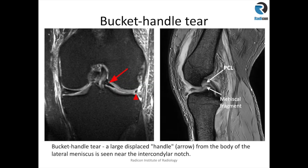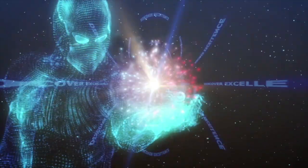Here is an example of a bucket handle tear where the handle of the bucket has displaced into the intercondylar fossa, producing a double PCL sign. This is the original native PCL, and you can see another structure almost following the configuration of the PCL just deep to it — this is the displaced meniscus fragment which is flipped anteriorly. The anterior horn of the meniscus and the displaced flipped bucket handle component are both visible, so this can be described as a floppy flipped bucket handle tear.